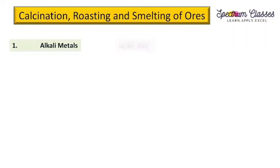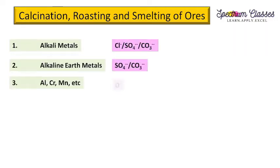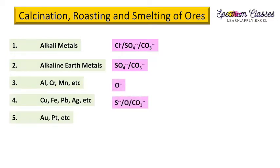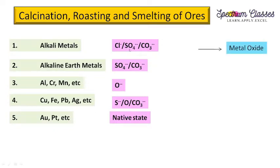Before discussing these terms, let us review the ores of different metals based on their reactivity, as discussed in previous videos. Metals are divided into groups based on reactivity and form different salts. We mainly have sulphates, carbonates, oxides, hydroxides, and for alkali and alkaline earth metals, chloride salts. Most ores contain oxygen.